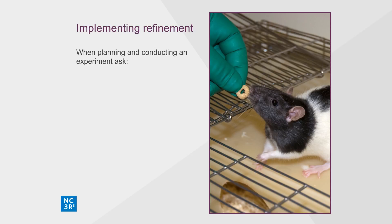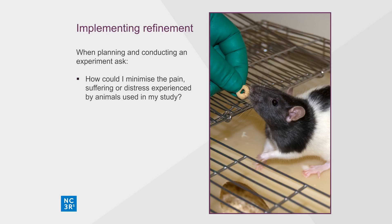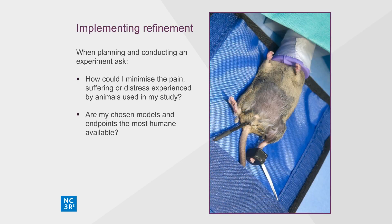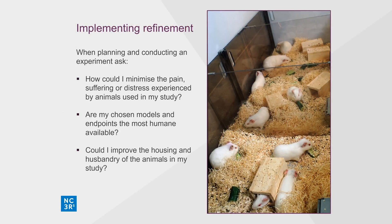Thinking about refinement is an essential component of both the planning and conduct of animal experiments. Regular discussion with your veterinarians and animal care staff helps to ensure that every opportunity is taken to minimise pain, suffering or distress, and improve animal welfare. Establishing and reviewing humane endpoints can make a big difference — it is important to ask whether it's possible to intervene earlier to minimise animal suffering without compromising the scientific objectives. Improving the housing and husbandry of animals under your care, for example through effective environmental enrichment, is often the simplest way to improve welfare.